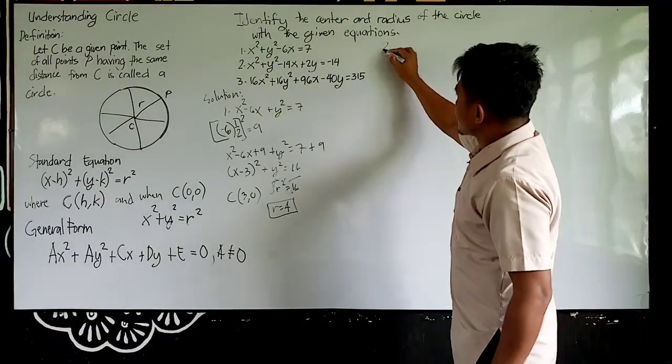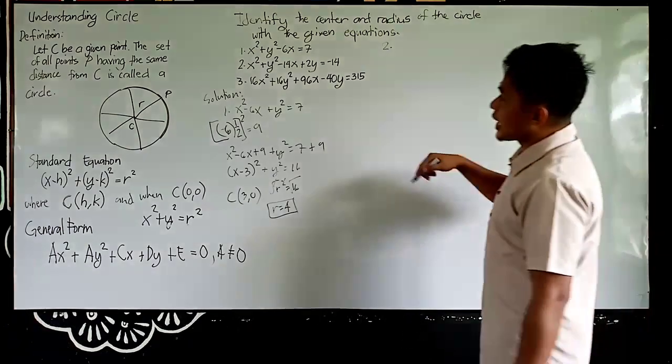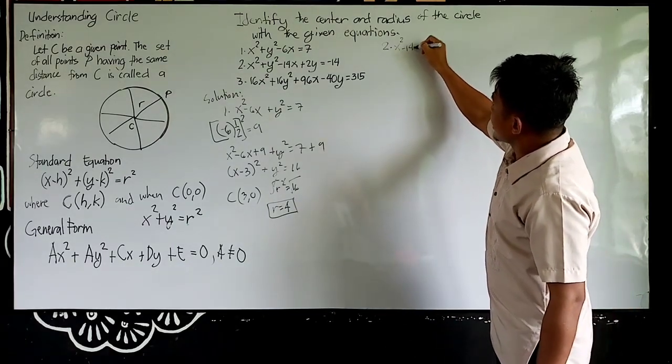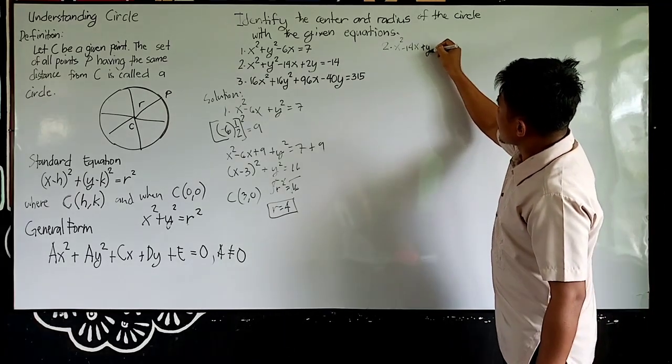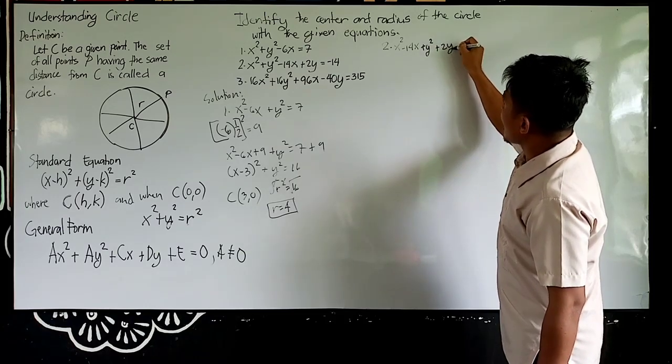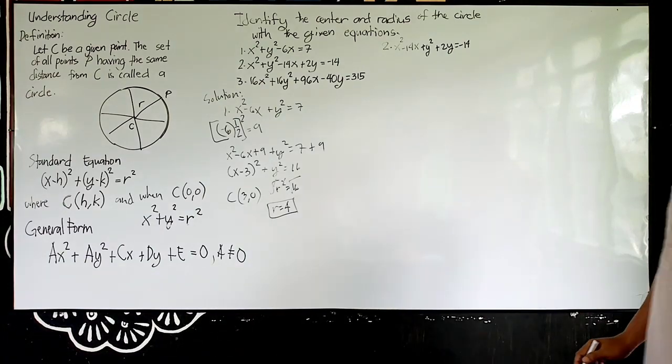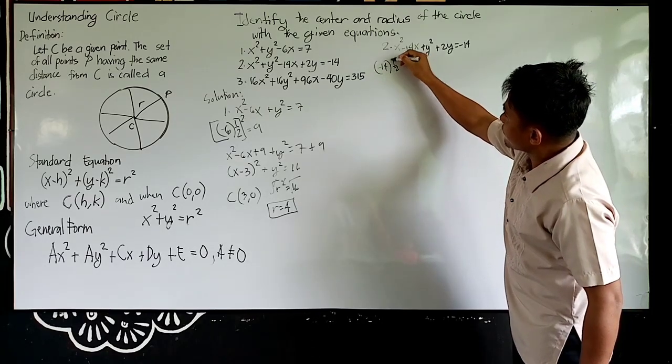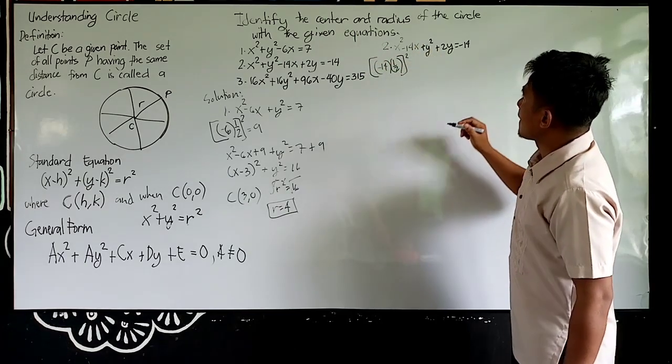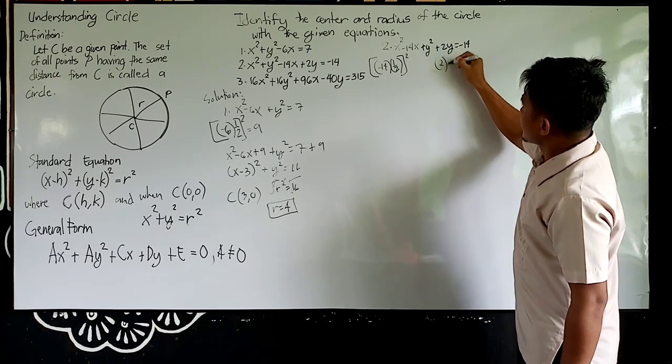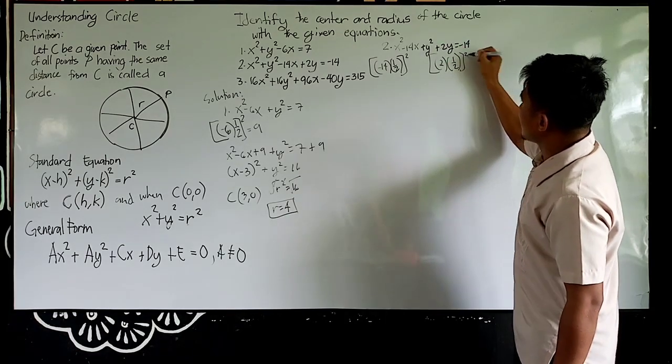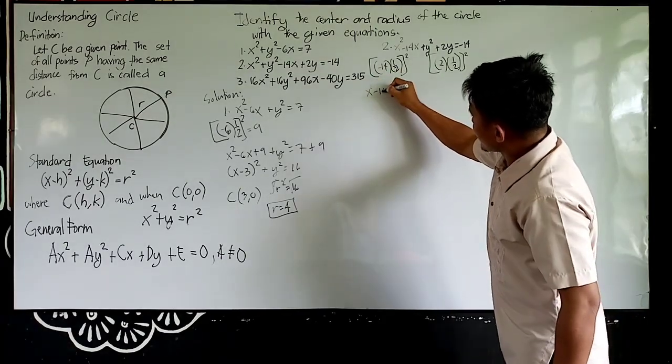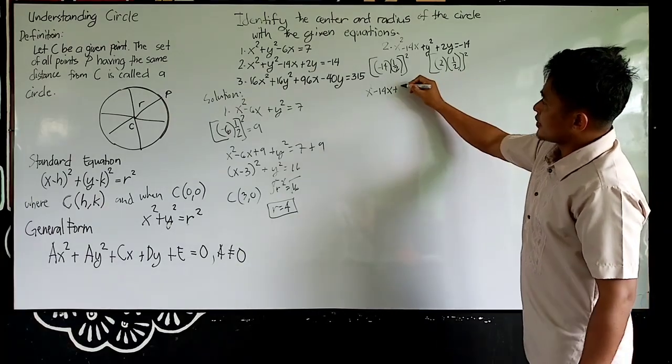Again, number 2. Let us proceed to number 2. Again, pinakaunang gagawin, i-group mo by variable. So x² - 14x, then plus y² plus 2y plus negative 14. Negative 14 times 1 half, the result squared, then ito, 2 times 1 half, then the result squared. Your result will be x² - 14x + 49. Di ba? Negative 14 times divided by 2, or times 1 half, is negative 7, squared, is 49.